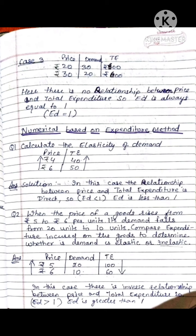Question 2: When the price of a good rises from rupees 5 to rupees 6 per unit, its demand falls from 20 units to 10 units. Compare the expenditure to determine whether demand is elastic. At price 5: 5 × 20 = 100. At price 6: 6 × 10 = 60. Expenditure falls from 100 to 60, showing an inverse relationship. Therefore elasticity of demand is greater than 1.